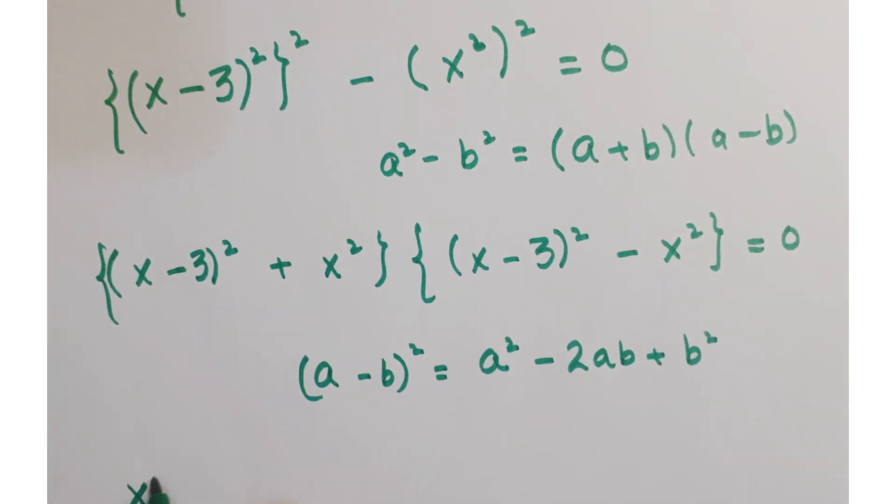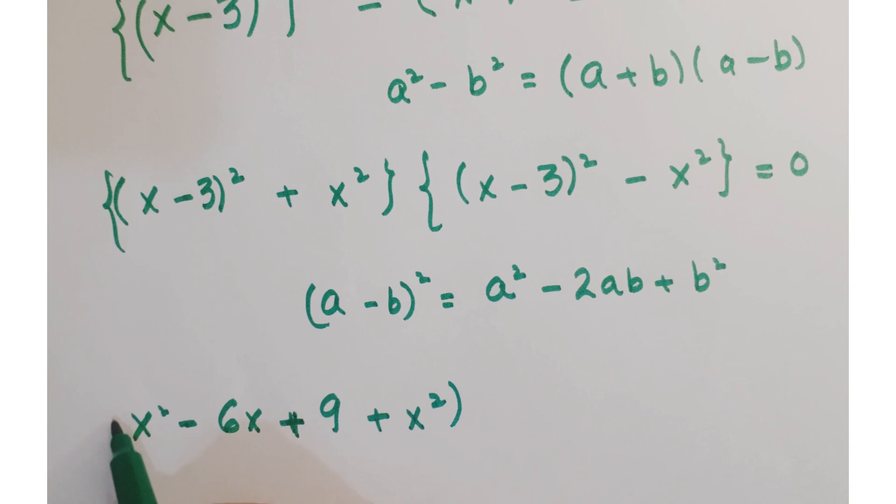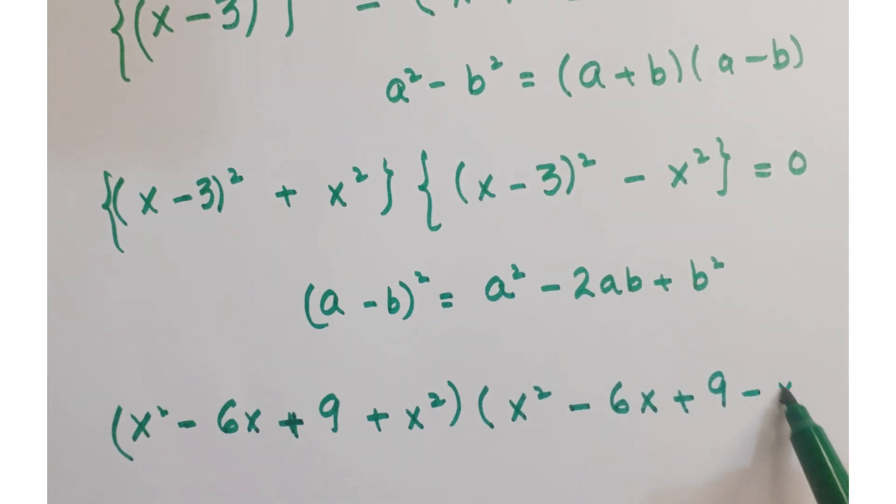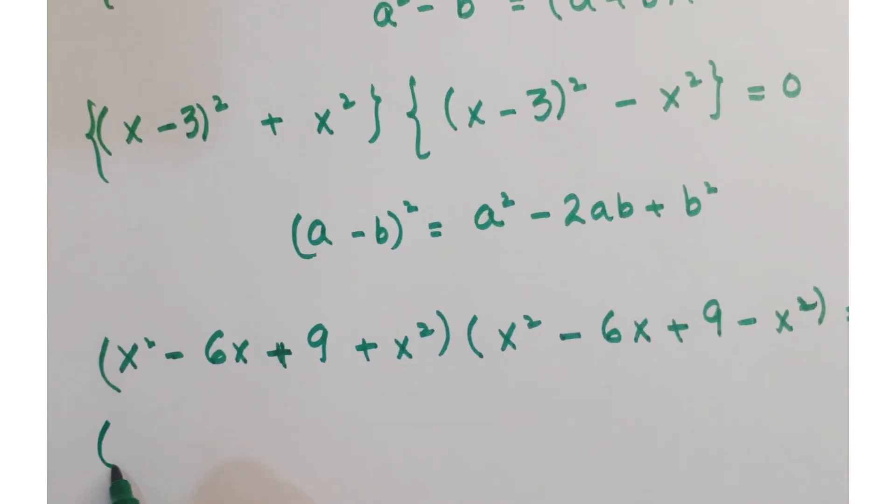expand this x minus 3 as x square minus 6x plus 9 plus x square, and x square minus 6x plus 9 minus x square is equal to 0.